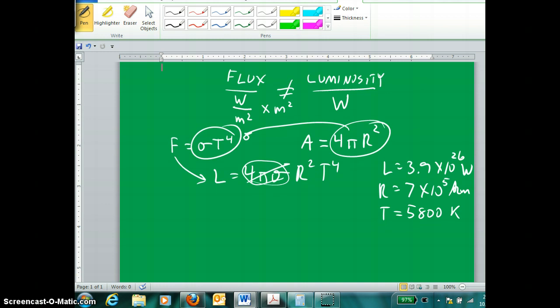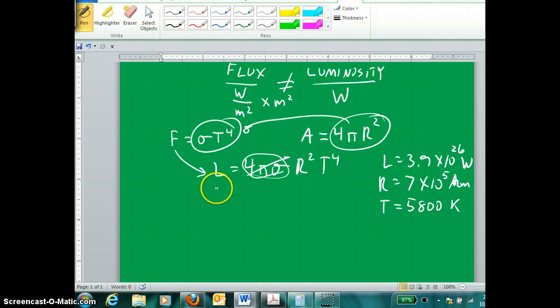So now, how would I employ this information? Well, I could use a much simpler version if I knew, say, the absolute magnitude. And let's say I knew from absolute magnitude that one star was just twice as luminous as our star. We put a 2 in there.